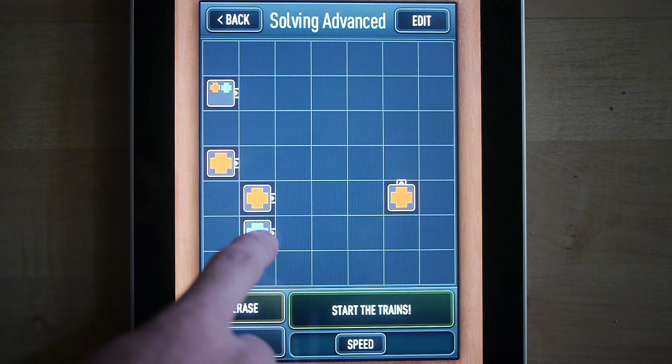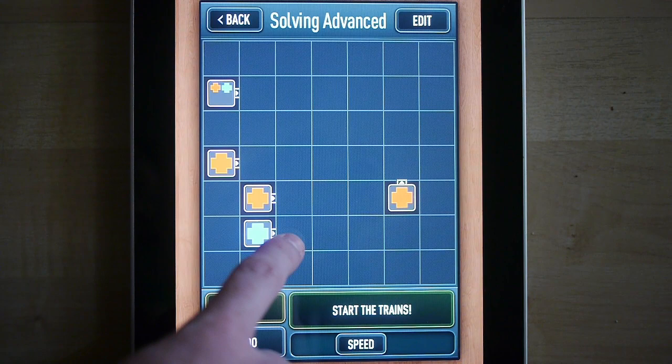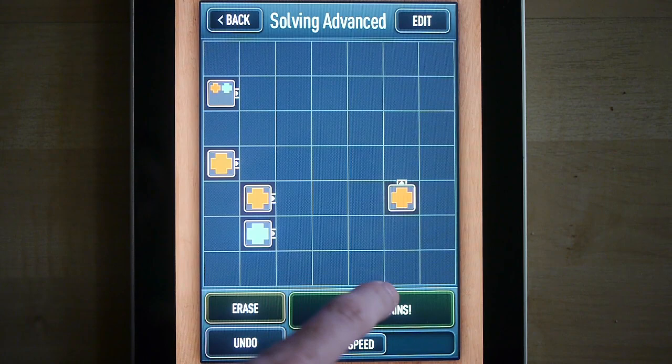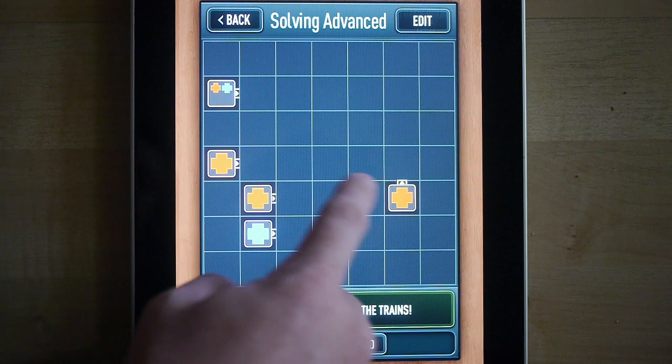...you'll see that any trains that start from a station that's on a black square will always be able to merge with other stations that start on black squares and vice versa. So in this example here, these two trains, because they're on a diagonal, would be on the same chessboard color. So we know for sure that they're going to be able to merge.